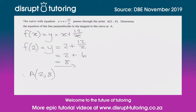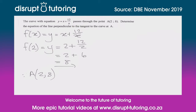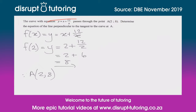The most important part of this question is that we need to figure out the equation of the line perpendicular to the tangent to the curve at A. We've got the curve y = x + 12/x and the point A=(2, 8). The gradient of the tangent at that point is going to be given to us using the derivative, f'(x).